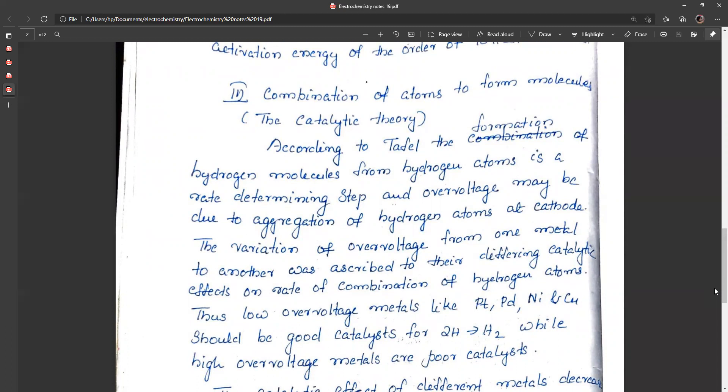the formation of hydrogen molecules from hydrogen atoms is the rate determining step. Due to this time lag, hydrogen atoms get aggregated at the cathode, and overvoltage is due to this aggregation. The variation of overvoltage from one metal to another is due to their catalytic effect on the rate of combination of hydrogen atoms.